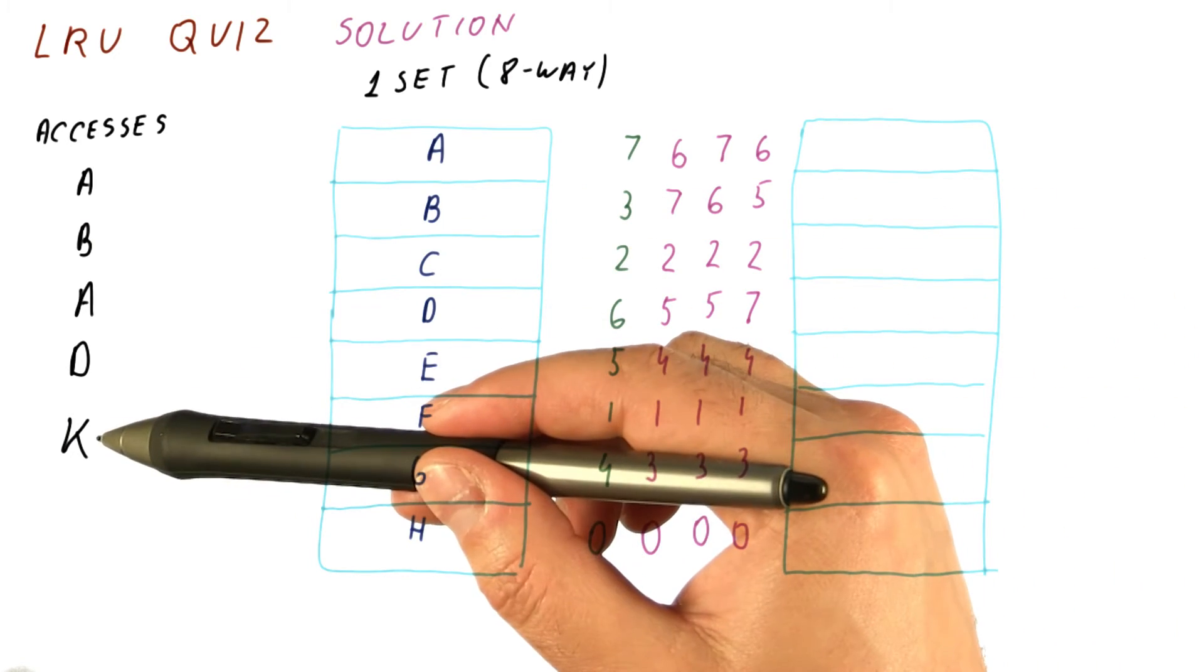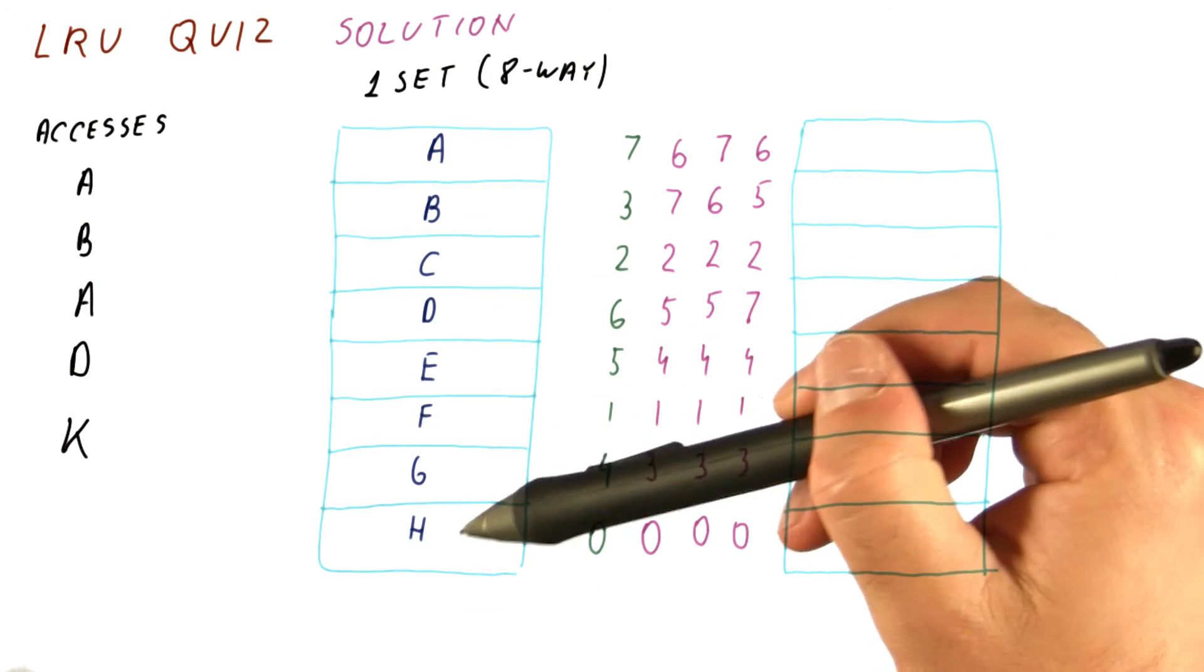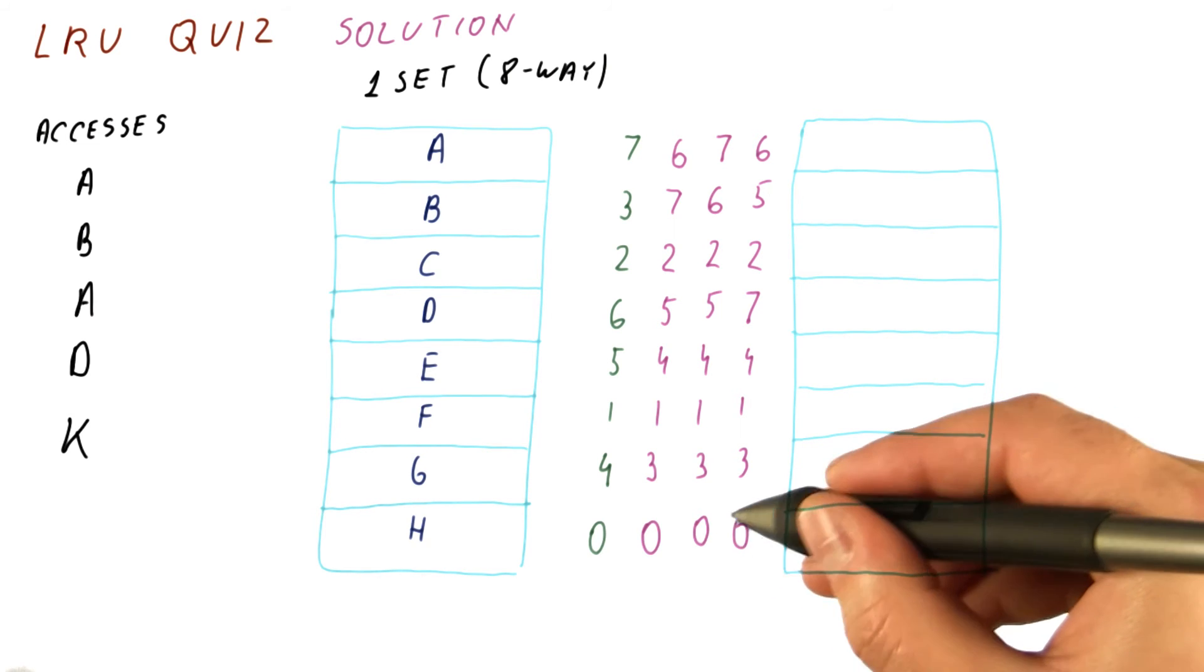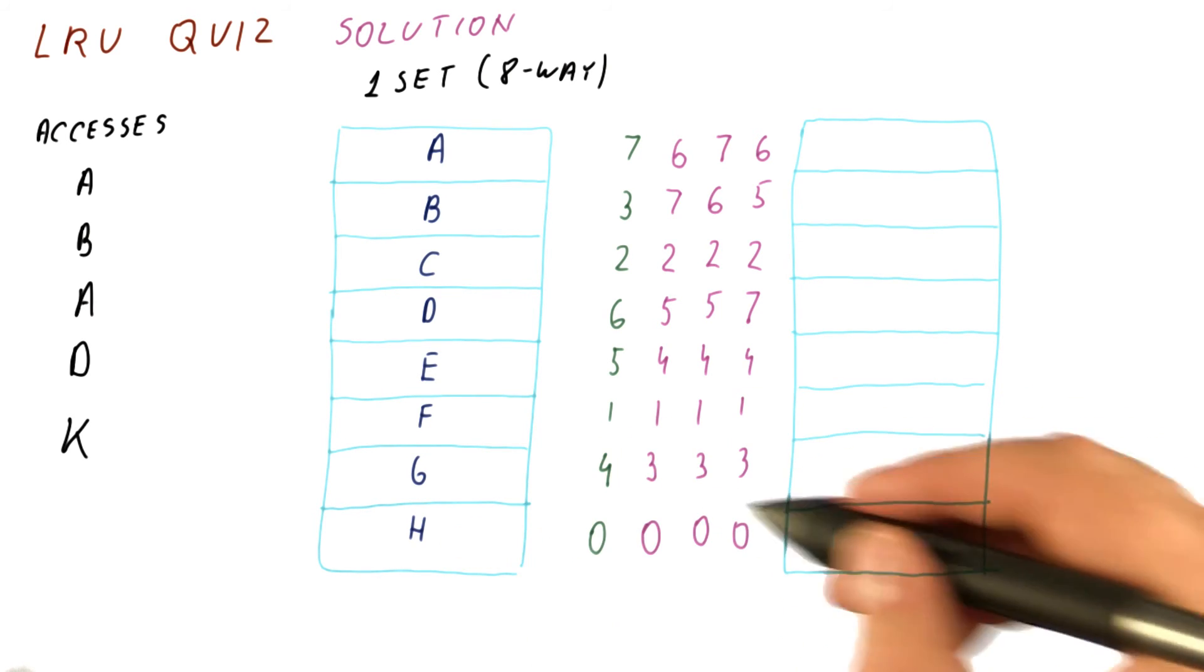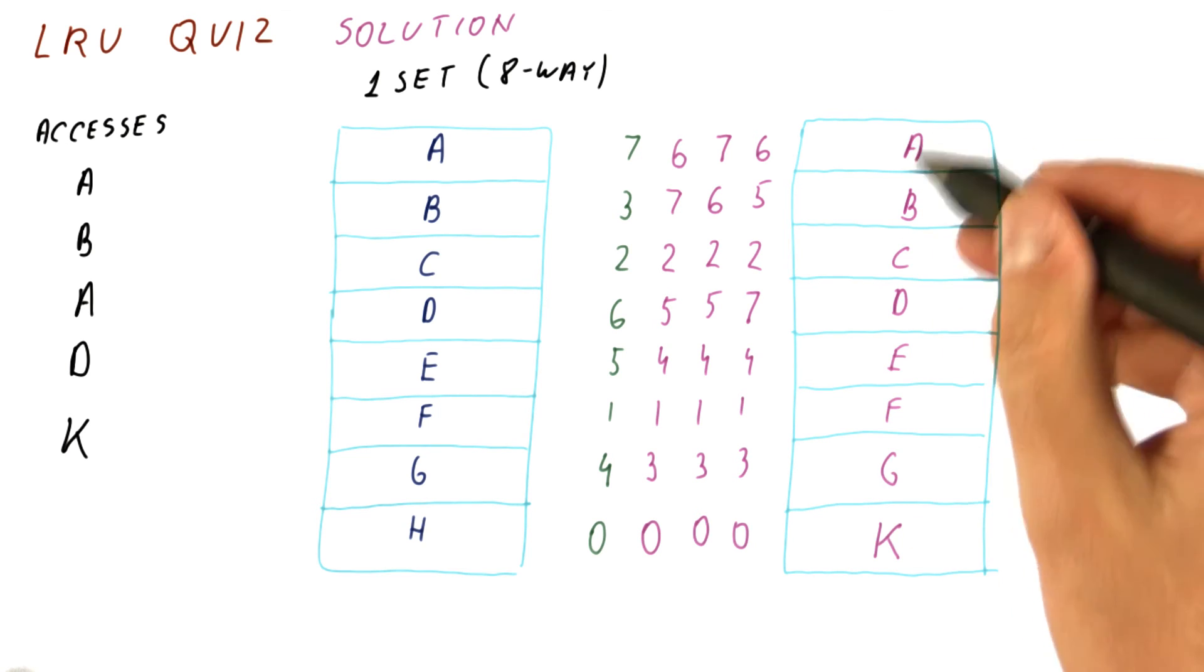The only change will be when we access K, which is a miss. So now we need to choose who goes out. And the one that goes out is the one whose counter is 0. So H is replaced by K. The other blocks remain the same as they were.